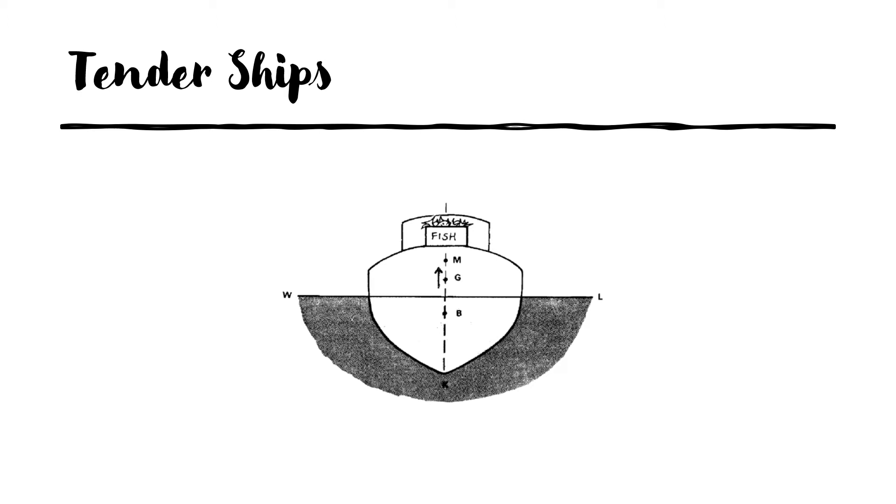The metacentric height is the vertical distance GM which pretty much determines the stability of the vessel. A vessel with little or no metacentric height, that is reduced GM, is said to be a tender ship.